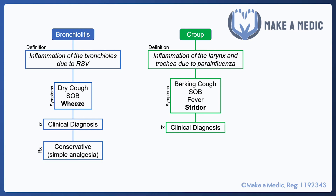Bronchiolitis usually gets better by itself — it's a case of keeping the child comfortable using simple analgesia. One thing to note is that bronchiolitis can cause quite severe infection in certain vulnerable children, especially those who are preterm. These children may be given a monoclonal antibody called palivizumab to prevent severe bronchiolitis infections.